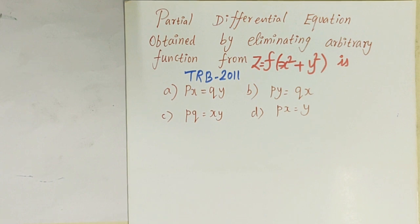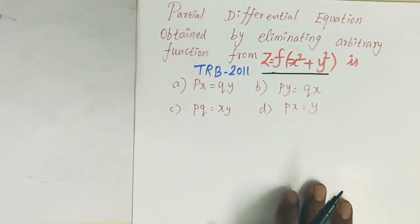The partial differential equation obtained by eliminating the arbitrary function from z equal to f of x square plus y square is given with options.